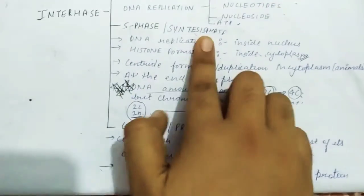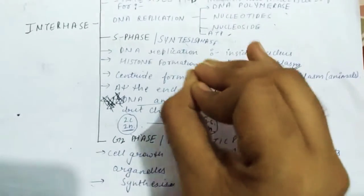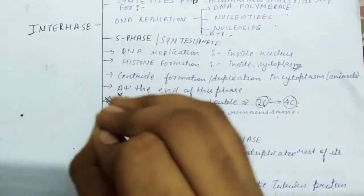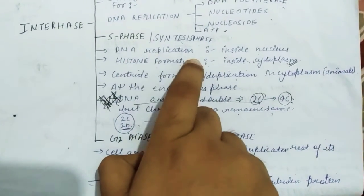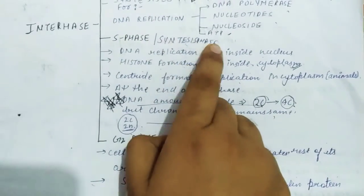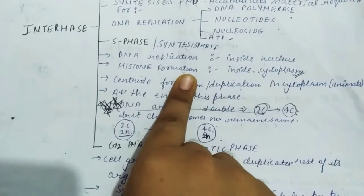In S phase, DNA replication occurs. We call it synthesis phase because the most important part of the cell cycle is synthesis. DNA replication is a very important thing. DNA duplication, DNA doubling, replication—this is in S phase. This is the most important phase of the interphase.